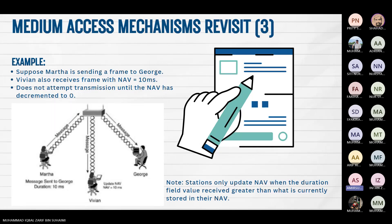For example, suppose Marta is sending a frame to George. Vivian also receives the frame with a NAV equal to 10 milliseconds and does not attempt transmission until the NAV has decremented to zero. A station only updates its NAV when the duration field value received is greater than what is currently stored in the NAV.